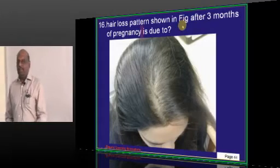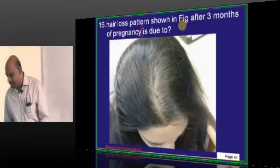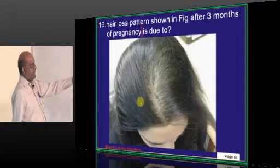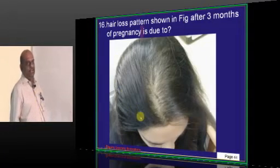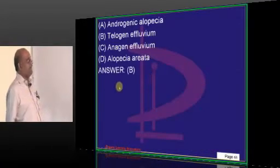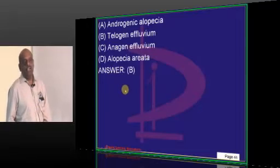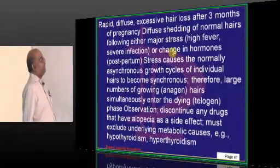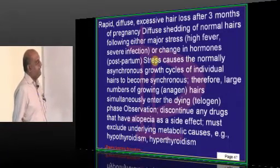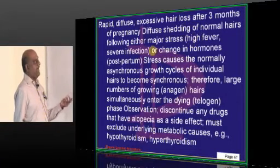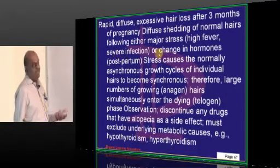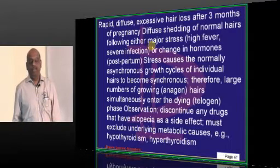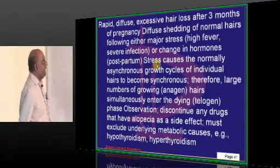After 3 months of pregnancy, there is hair loss in this pattern. After a stressful event, telogen effluvium is going to be your diagnosis classically. It can occur after stress like high fever, severe infection, or a hormonal change as in the postpartum period.